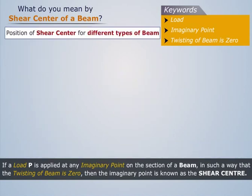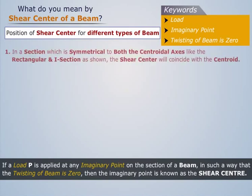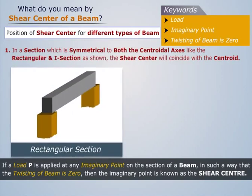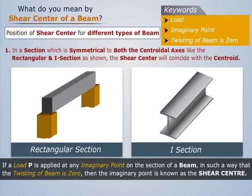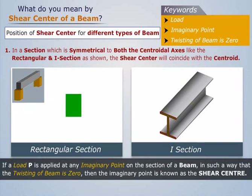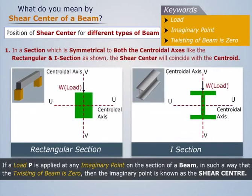Now, let us understand the position of shear center for different types of beam. In a section which is symmetrical to both the centroidal axes, like the rectangular and eye section as shown, the shear center will coincide with the centroid.